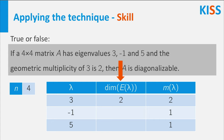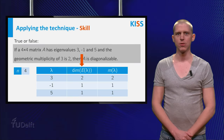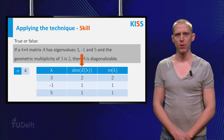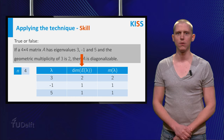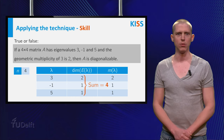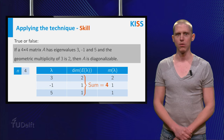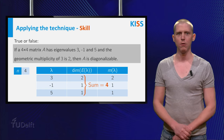Now you have found the algebraic multiplicities, you can focus on the geometric multiplicities. Only eigenvalue 3 has a known geometric multiplicity. However, as you remember from the first step of gathering knowledge, the geometric multiplicity is always at least 1, and always at most the algebraic multiplicity. For the eigenvalue minus 1, that means that the geometric multiplicity is at least 1 and at most 1, so it must be exactly 1. You can use the same argument to show that eigenvalue 5 also has geometric multiplicity 1. The sum of the geometric multiplicities is exactly 4, so no other option is possible. You have now finished the skill step.